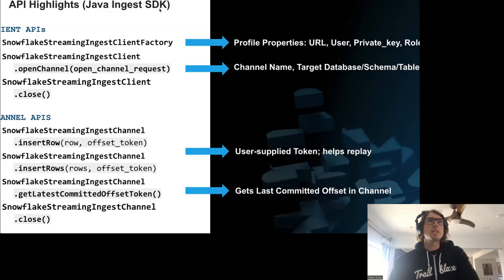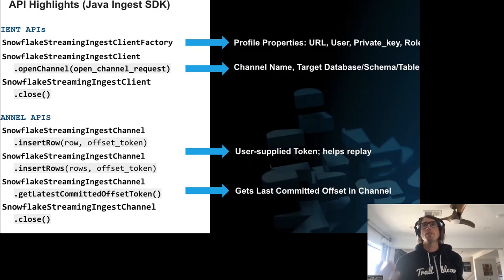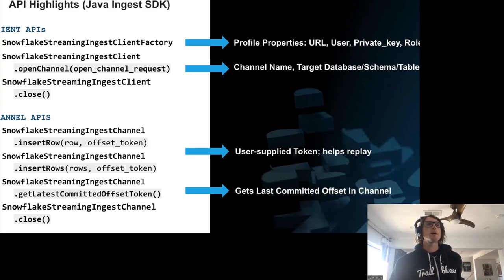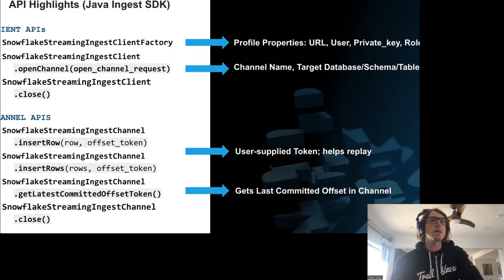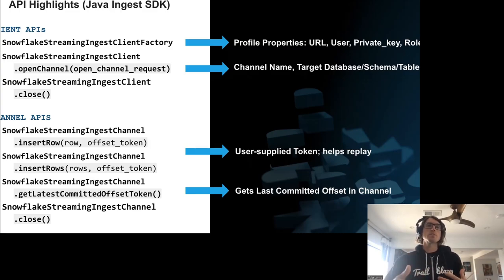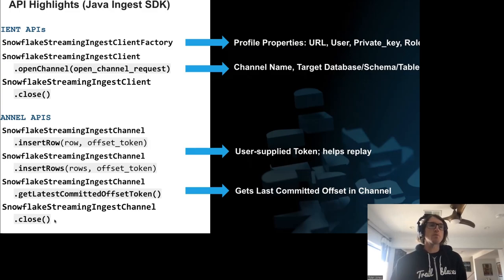Highlights of the Java Ingest SDK: using a factory instance you open channels to a table, providing the name, target database, schema, and authentication information — supporting key pair authentication as well as OAuth. Once you have a channel object, you call insert_row or insert_rows providing the row in schematized format and an offset token. There's also a method to get the latest committed offset token, allowing you to know how far Snowflake has committed relative to your upstream source — useful for checkpointing. There's also a close method for memory management.